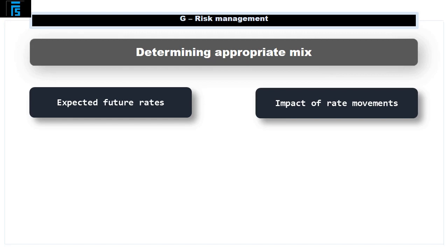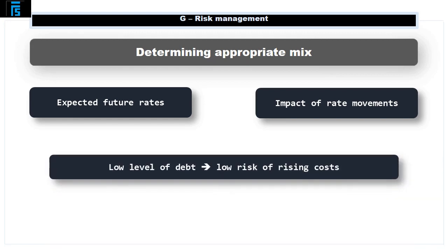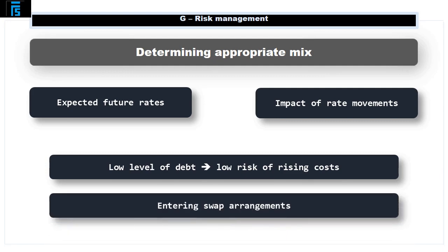For example, if a company has relatively low levels of debt, they may be willing to use a bigger proportion of variable rate, as an increase may not prove too costly. A company wishing to change the proportions may consider entering into a swap arrangement, an agreement whereby two companies pay each other's interest rate liabilities. This aspect is not covered further in this presentation.